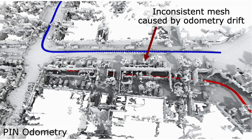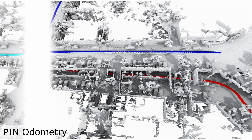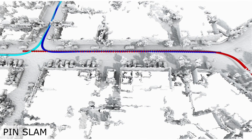Here is a second example where we see that again: the blue and the red trajectories are the trajectories recorded at different points in time along the same street. Through the loop closure, that gets corrected and we obtain a globally consistent map.